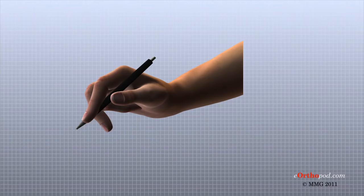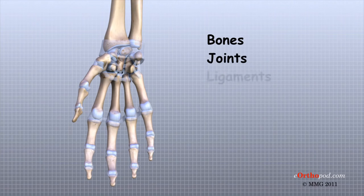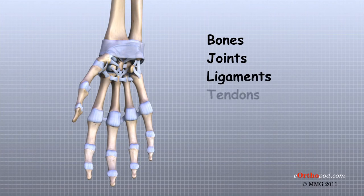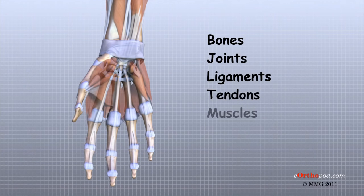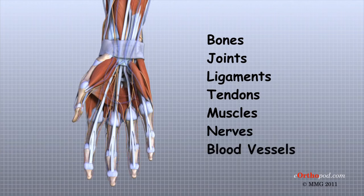The important structures of the hand can be divided into several categories. These include bones, joints, ligaments, tendons, muscles, nerves, and blood vessels.